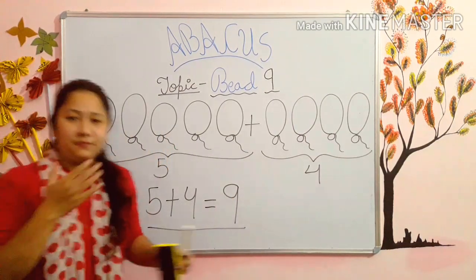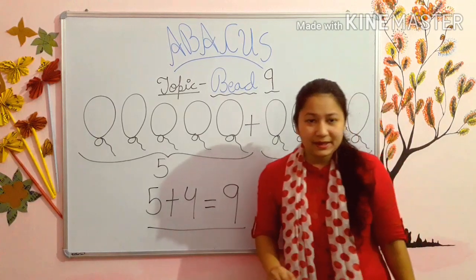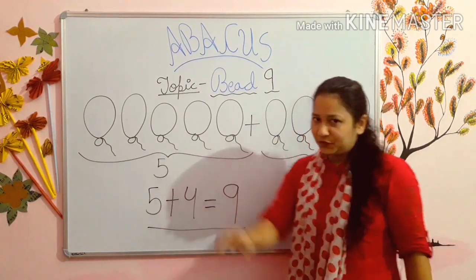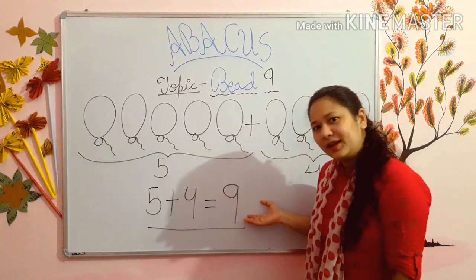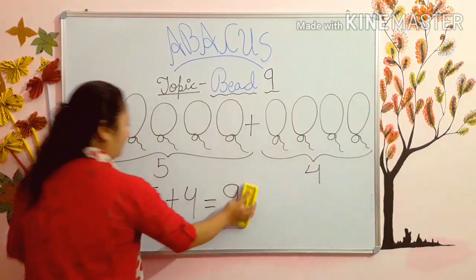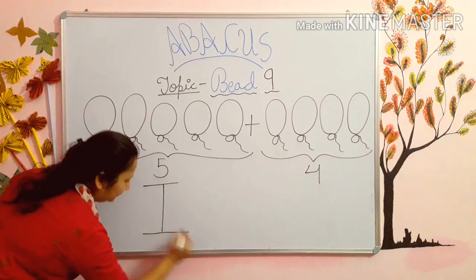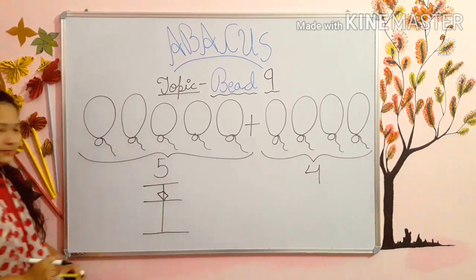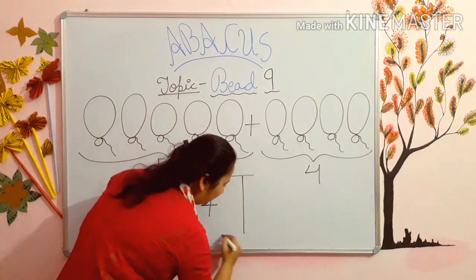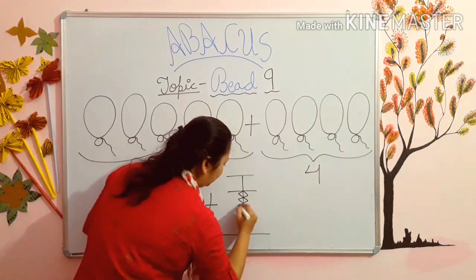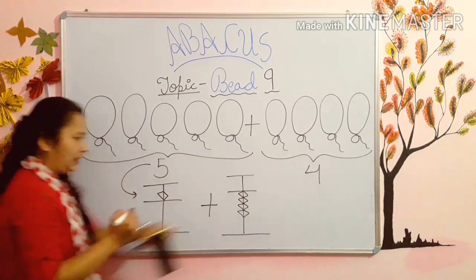This means if I have to make bead 9, first of all I will make bead 5, then I will make bead 4, and it is equal to 9. See — here is 5, so we will make bead 5. Here is 4, so we will make bead 4. This is 5 and this is 4.